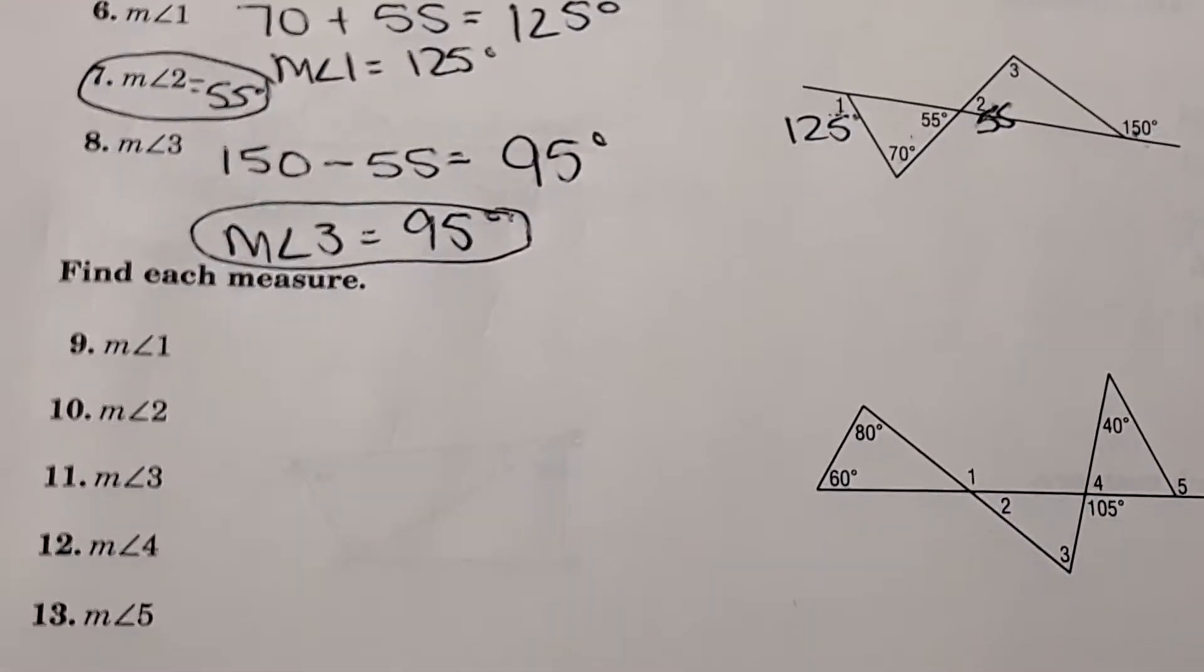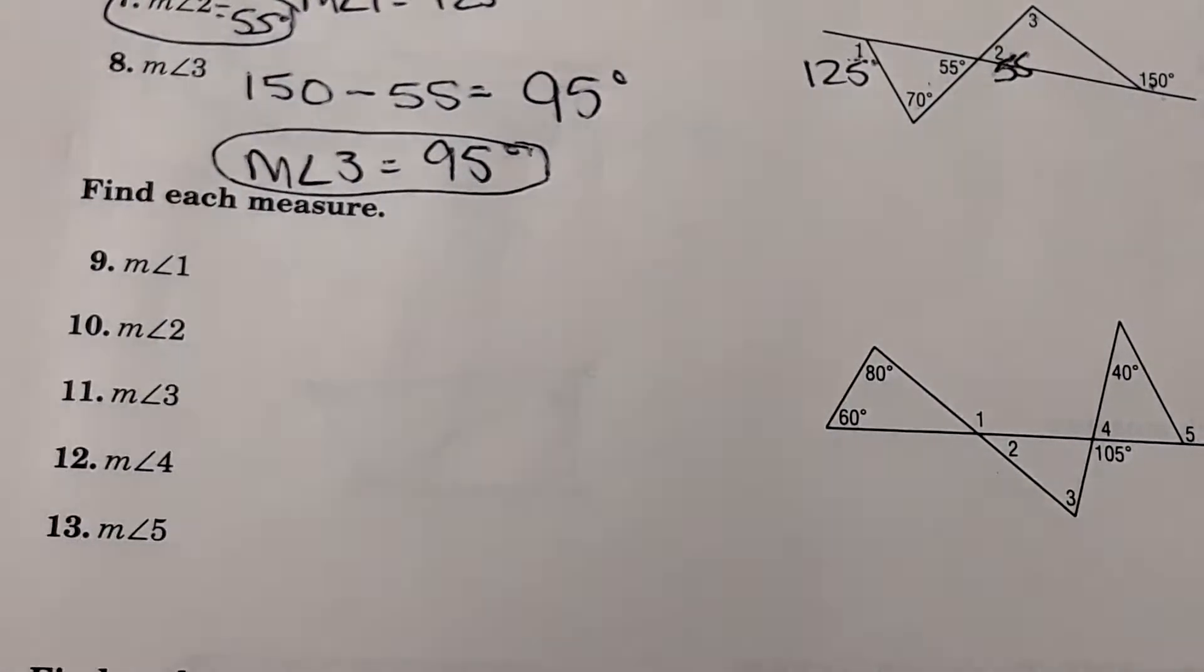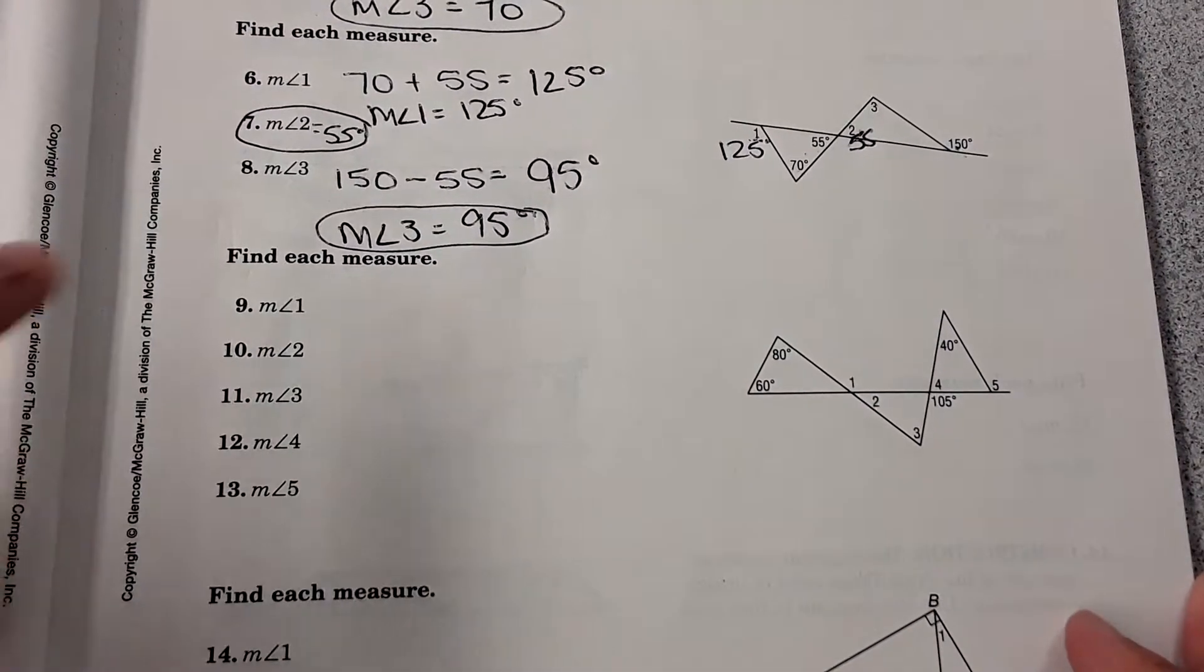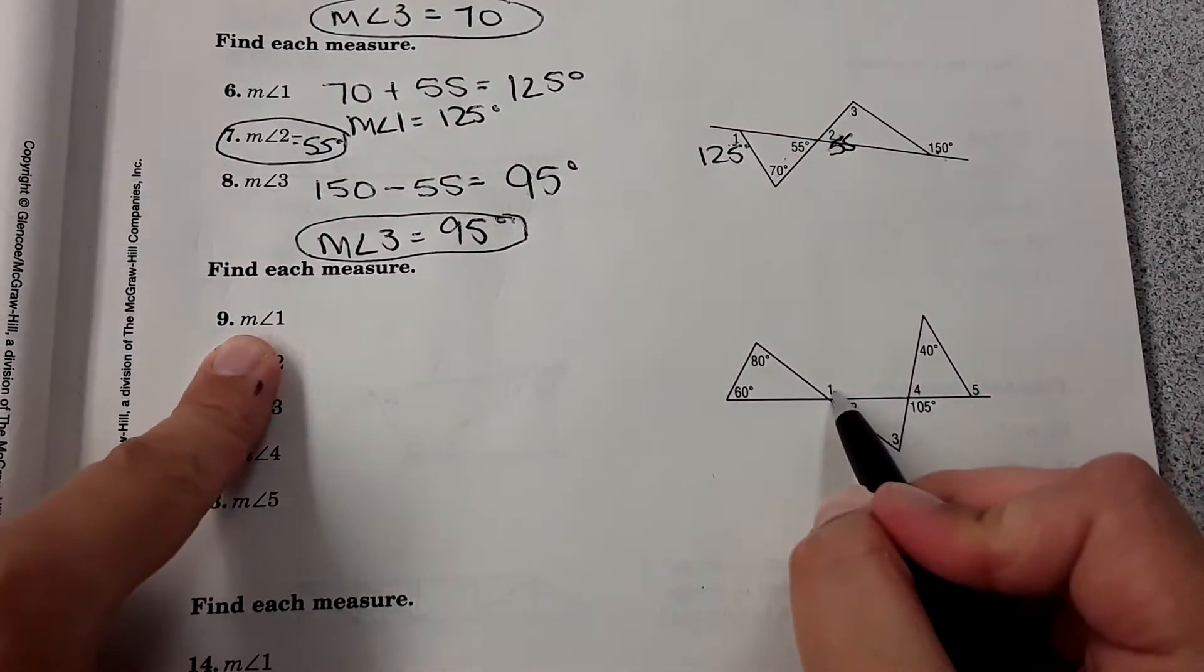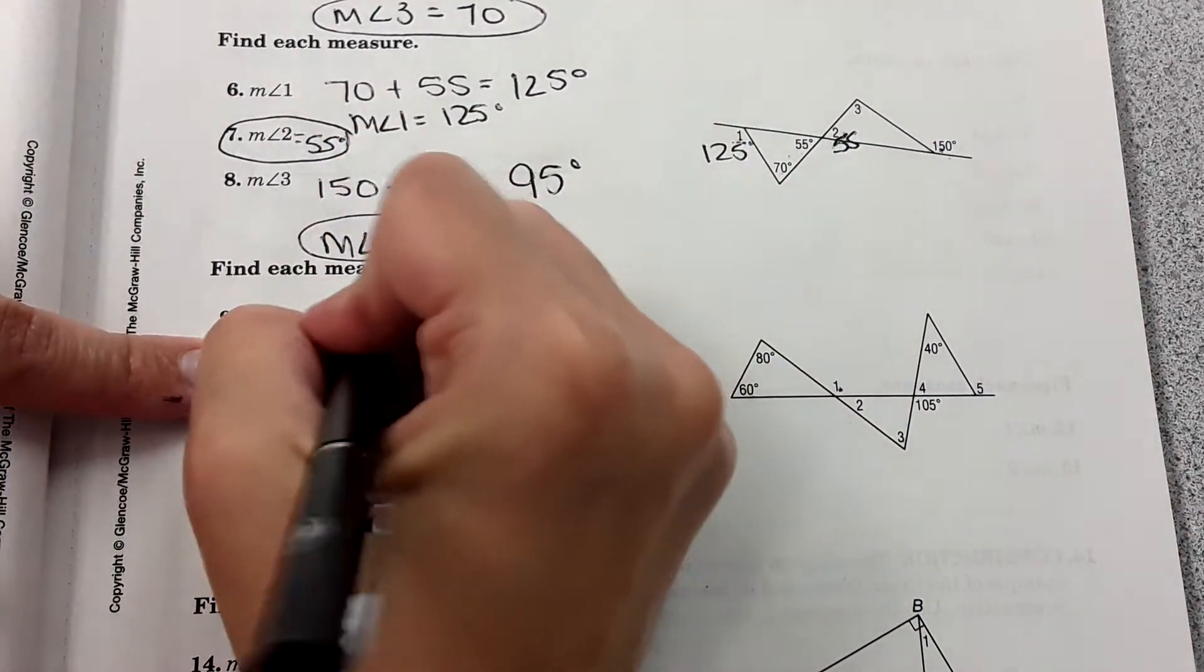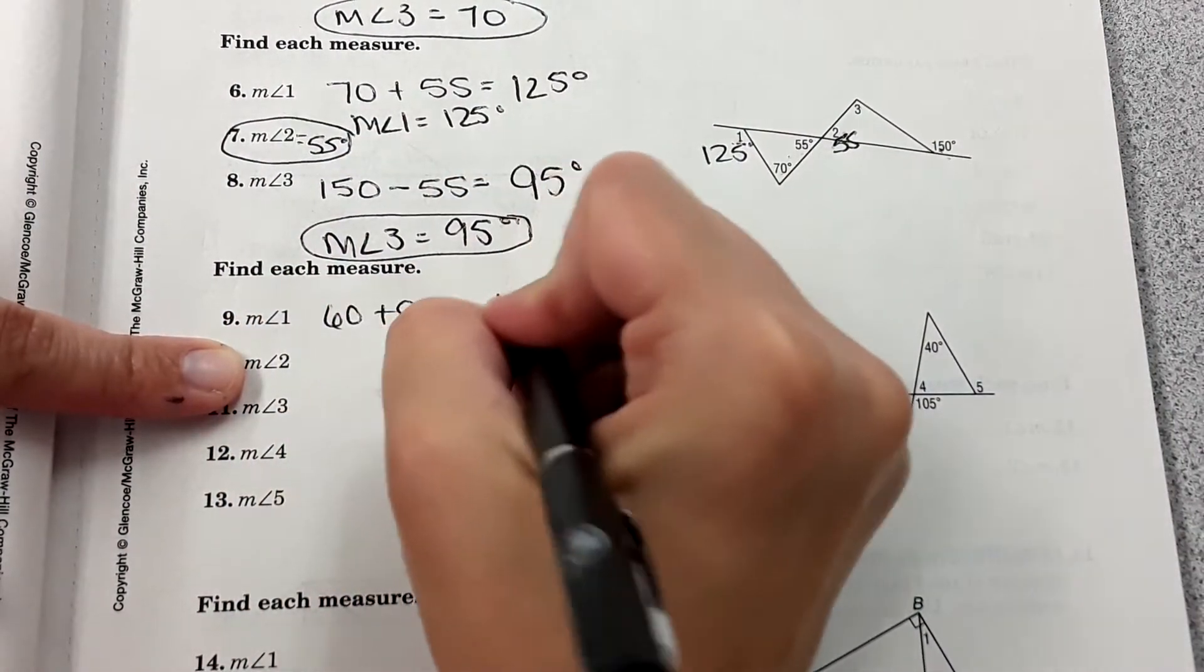Okay, and they get more complicated, not hard, just more detail here. Okay, so this one wants measure of angle one. That's an exterior angle, it must be the sum of these two, 60 plus 80, which equals 140 degrees.